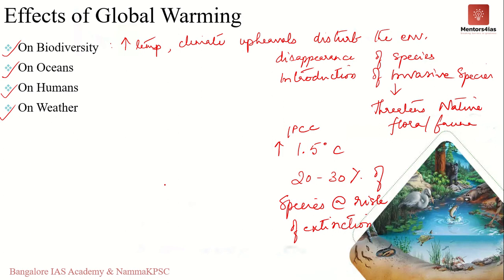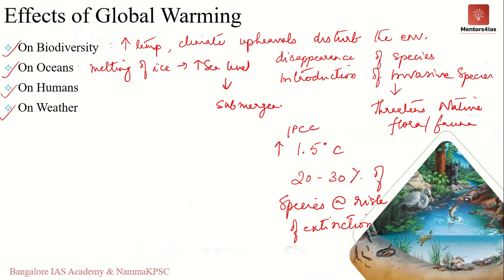Regarding the effect on oceans: due to global warming, permafrost and ice are melting massively at the poles, increasing sea levels at a rate never known before. This will result in the submergence of several islands and low-lying coastal areas. Additionally, large amounts of carbon dioxide captured by the oceans will make them more acidic, affecting marine biodiversity in our water bodies.